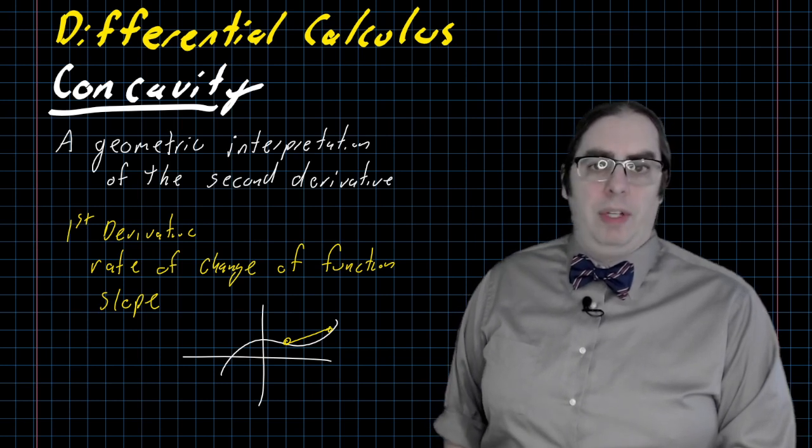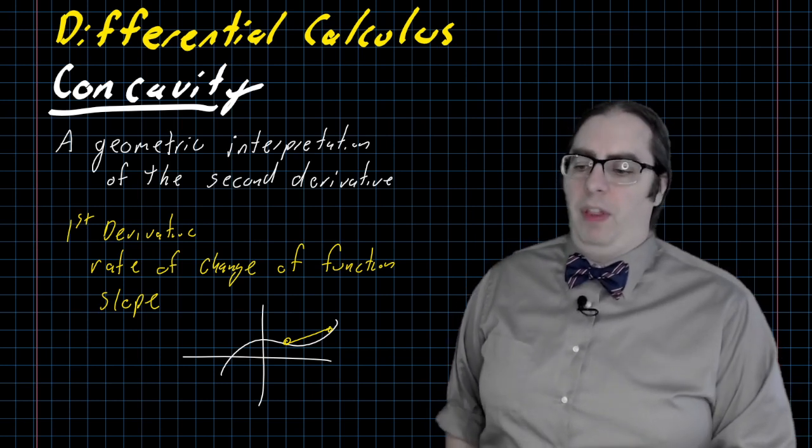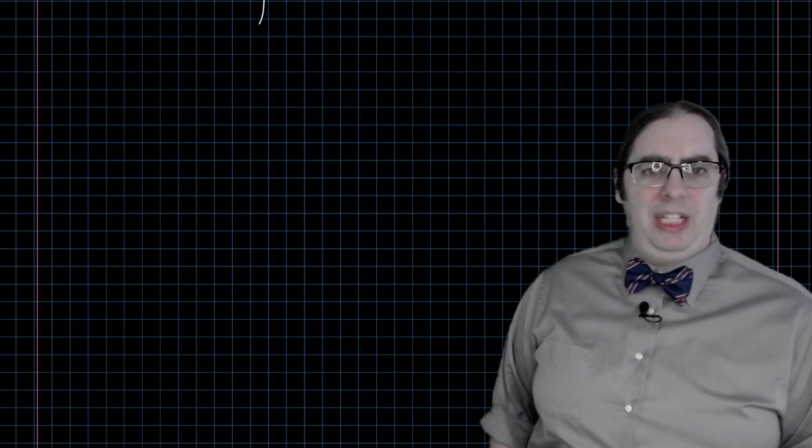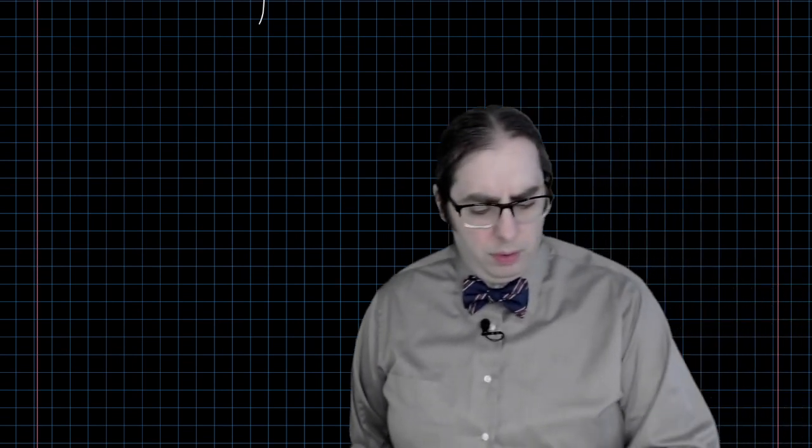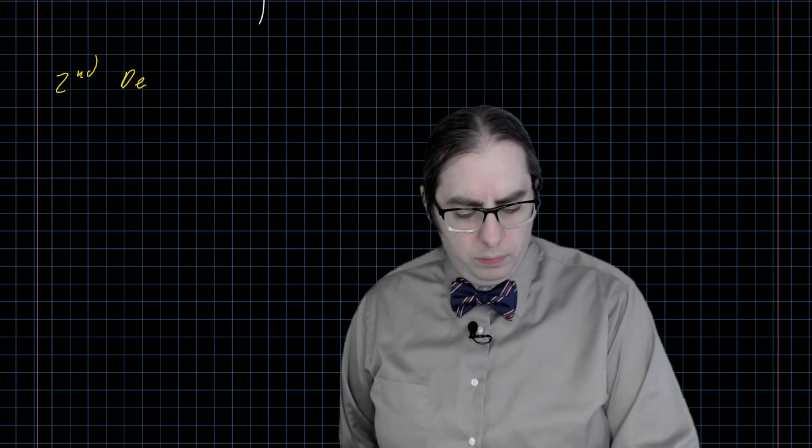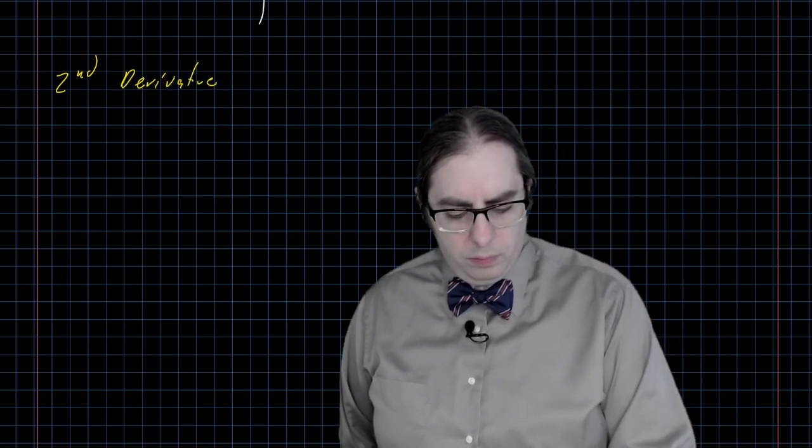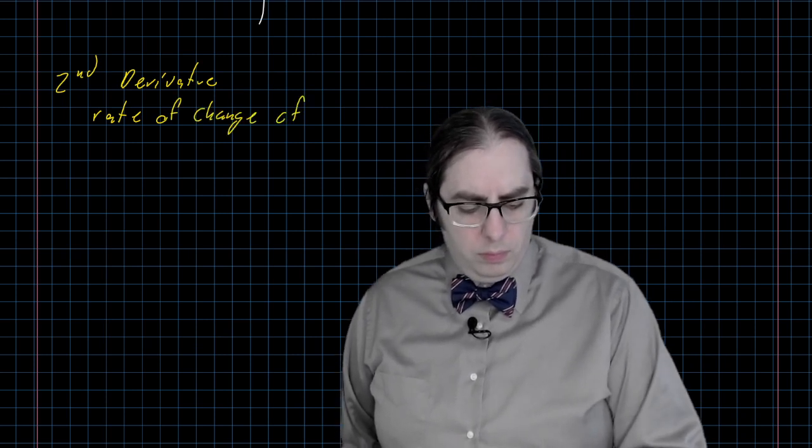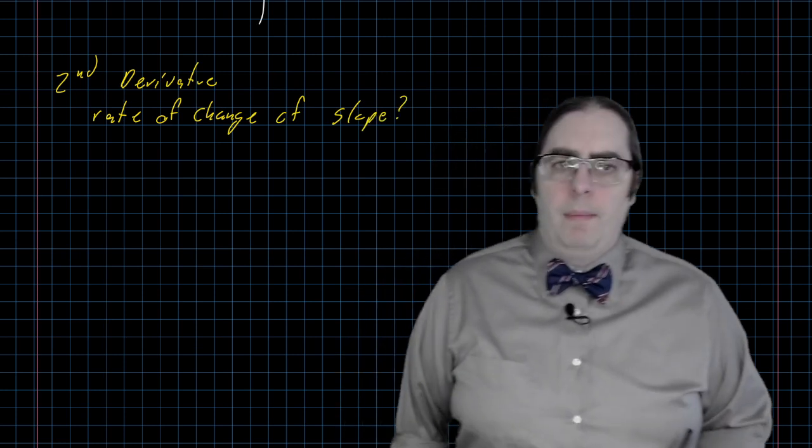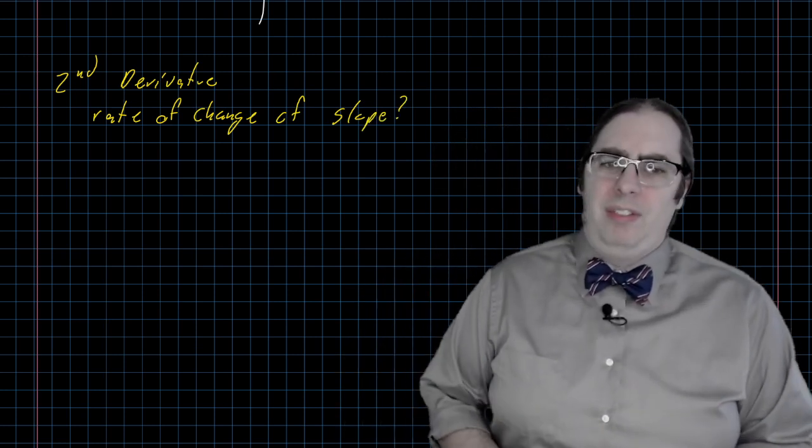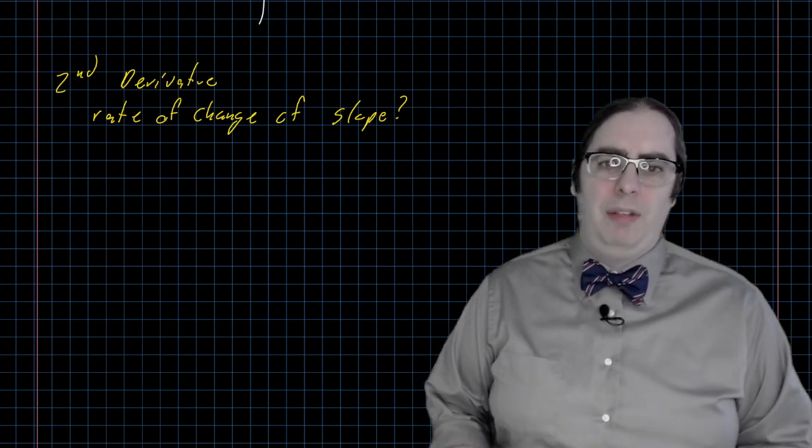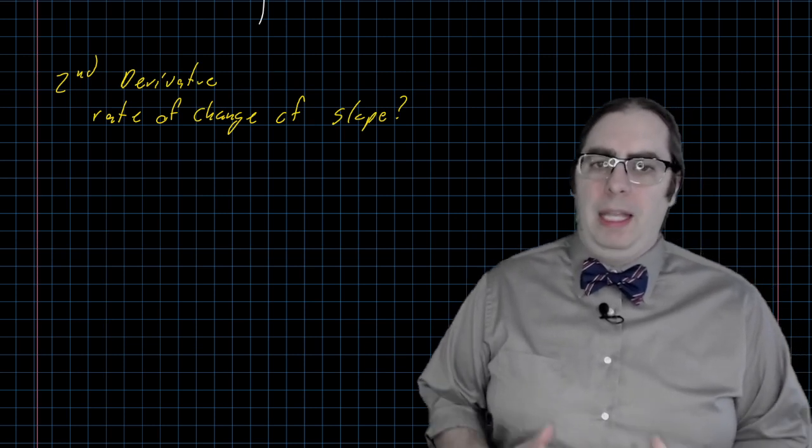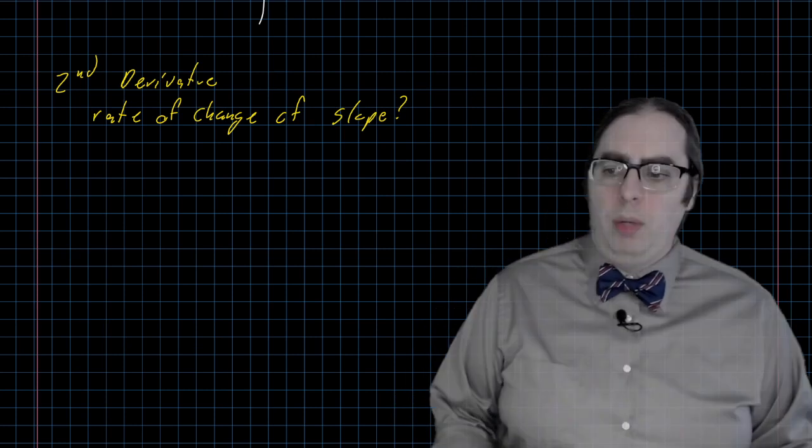The second derivative is the rate of change of the first derivative. So I guess that would be the rate of change of the slope. And once again, that doesn't necessarily make sense at first glance, but if we stop and explore that for a little bit, then it will make a lot of sense, and hopefully fairly quickly.